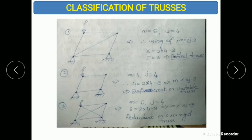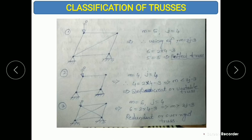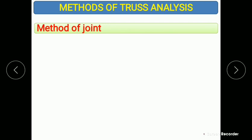In the third example: m = 6, j = 4. Substituting: 6 vs. 2×4 − 3 = 5. Left side is 6, right side is 5, so m > 2j − 3 — this truss is redundant or over-rigid. These two types (deficient and redundant) cannot be analyzed using equilibrium conditions; only the first type (m = 2j − 3) can.